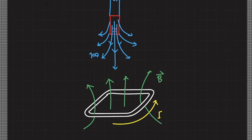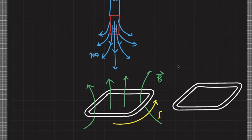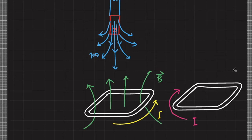However, when current flows in the opposite direction — if we view from the top and the current flows counterclockwise — then the magnetic field produced by this conducting loop points generally downwards.